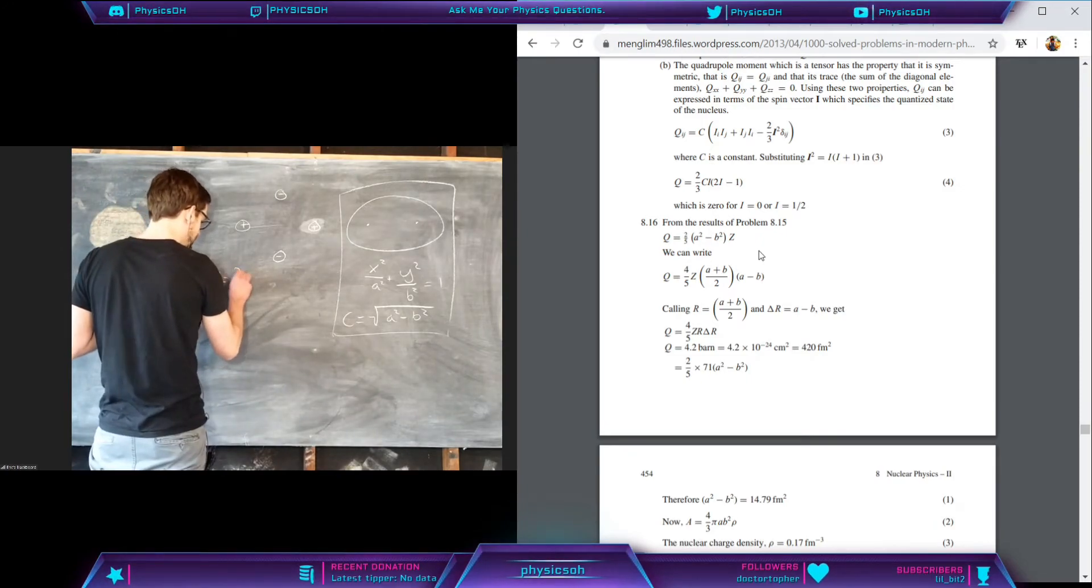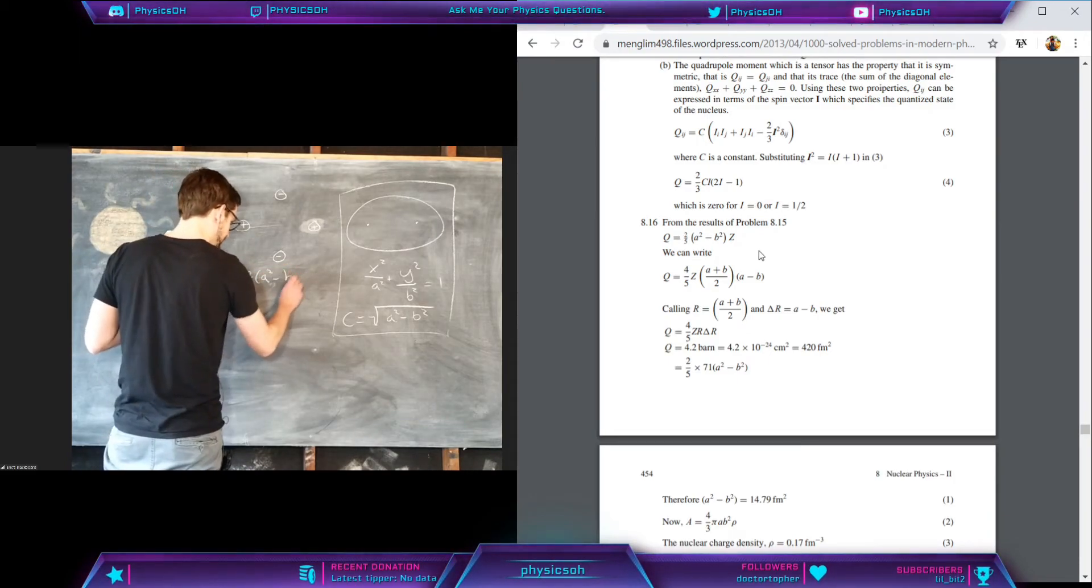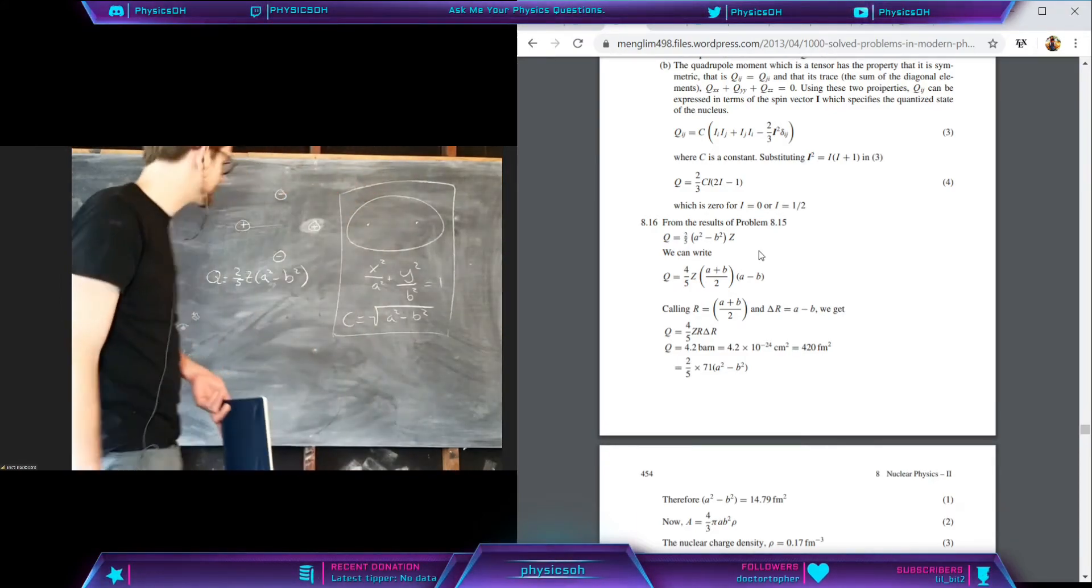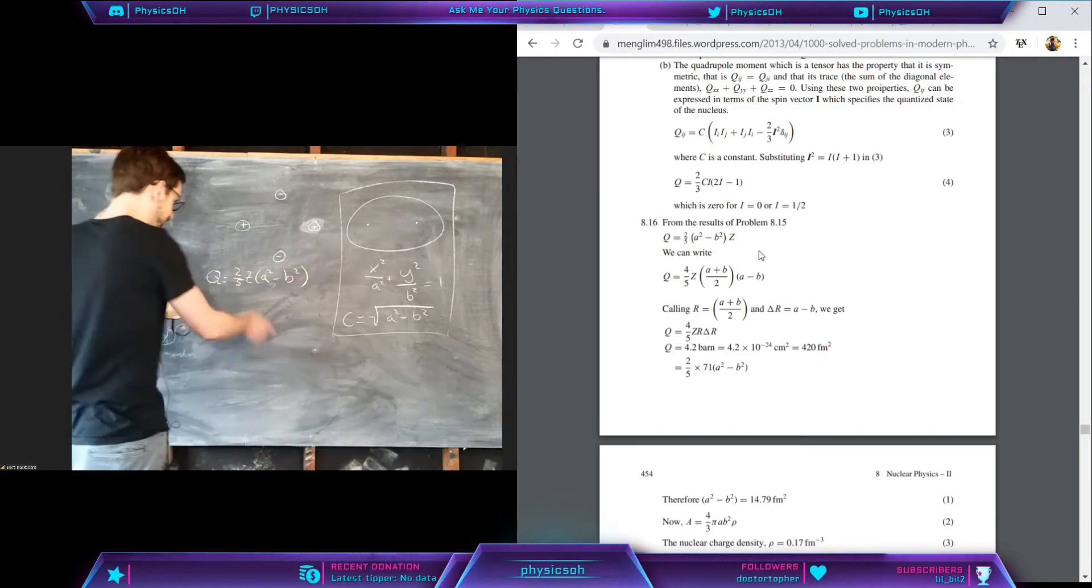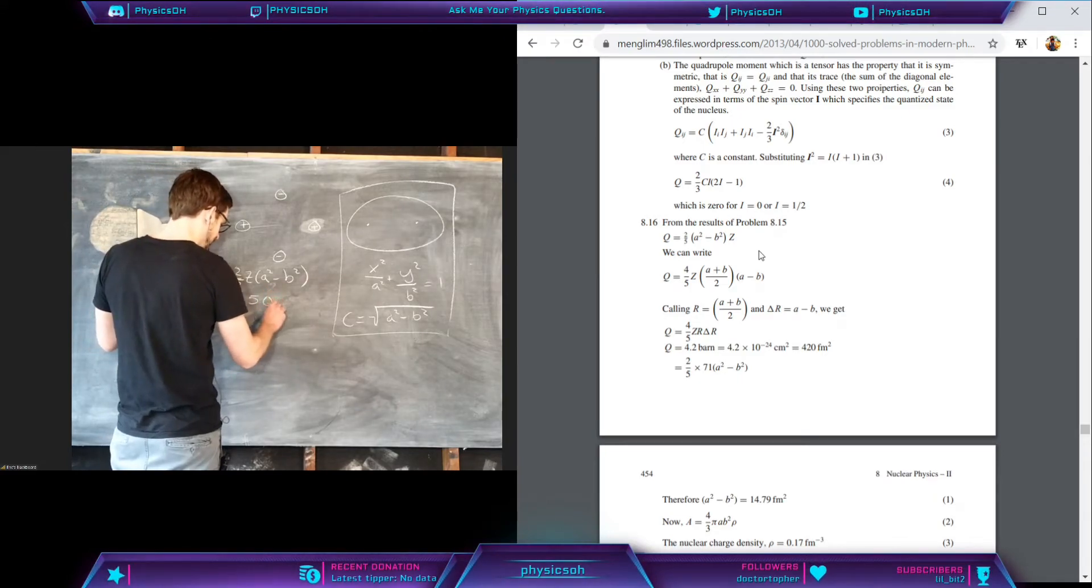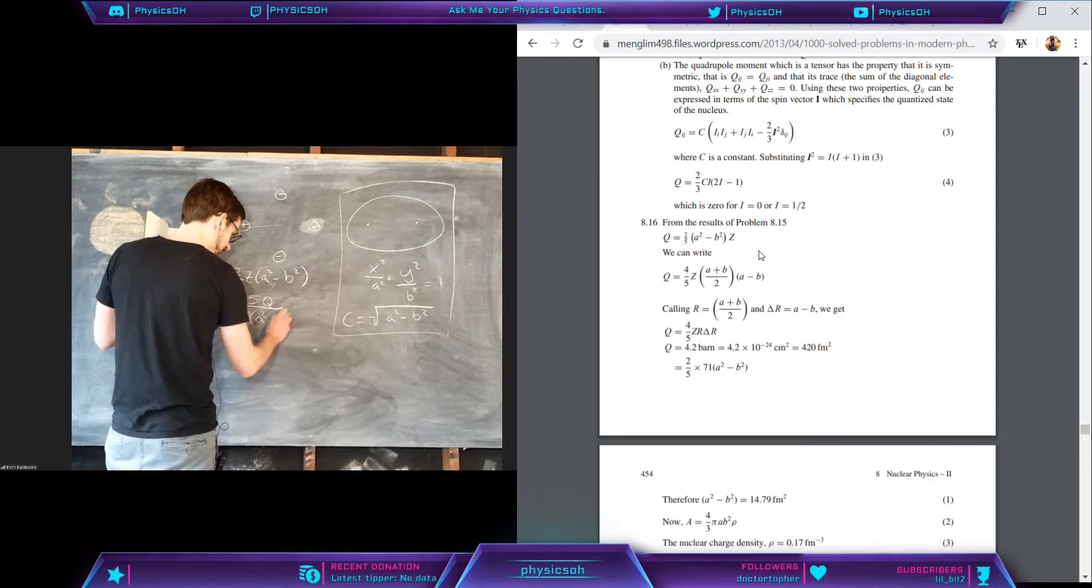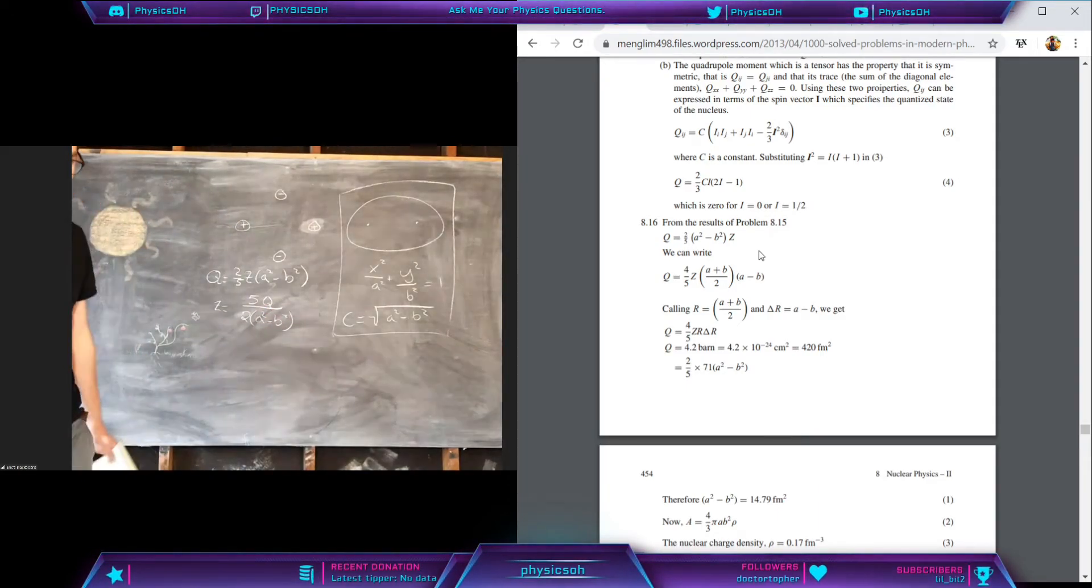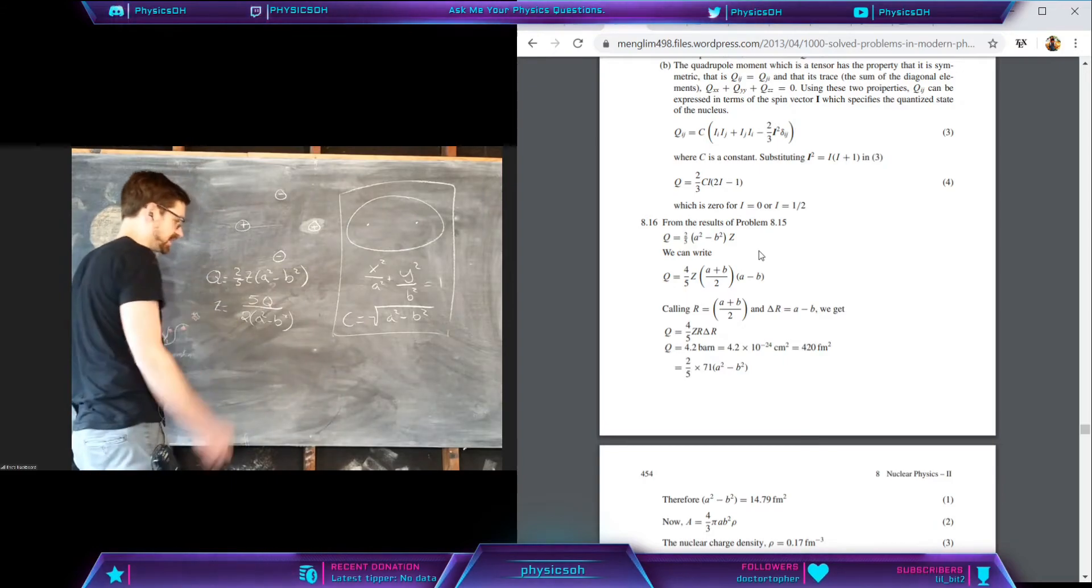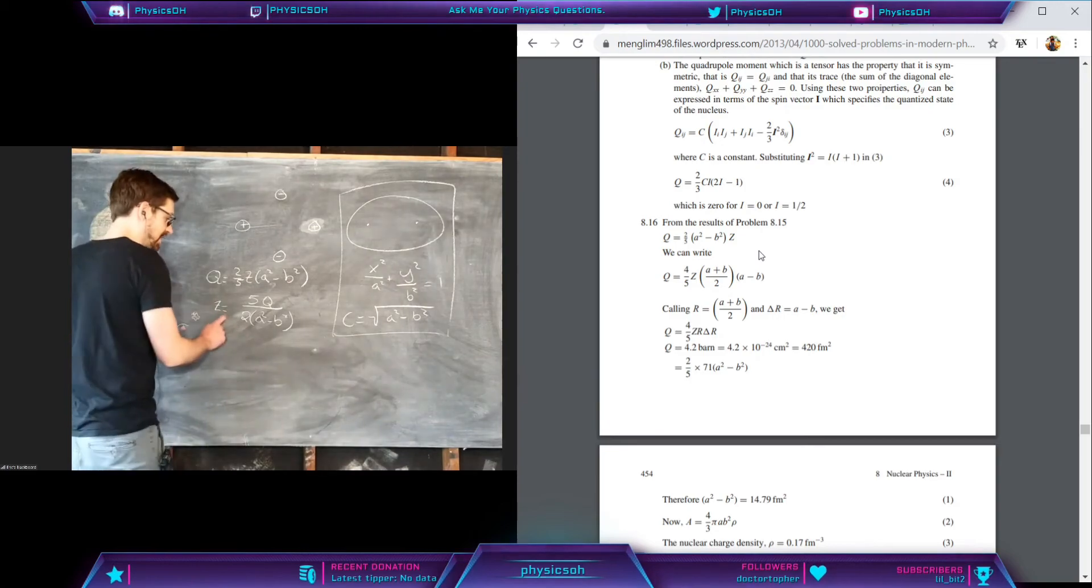Let me write it down: Q is equal to two fifths times Z times a squared minus b squared. Is that something you found in your textbook or anything like that? Basically you just rearrange it and you can find Z, the atomic number, is going to be five times Q over two times a squared minus b squared. I don't know if you have to get to this on your own or whatever, but this will solve it pretty easily.